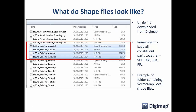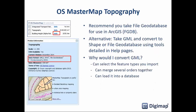A shapefile is not a single file. When you unzip the data from us, you'll find a minimum of four — maybe five or six — files all with the same name but different extensions. These together form what's commonly called a shapefile; you must keep them all together, otherwise it won't work. The main one is the .shp file and that's the one you load. For MasterMap Topography, we recommend taking the file geodatabase format — we've converted it ourselves and it makes it much easier to load into ArcGIS without any conversions.